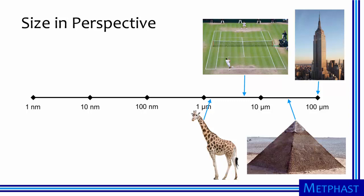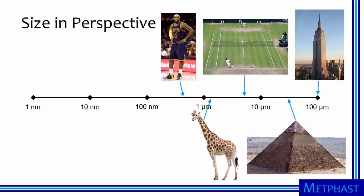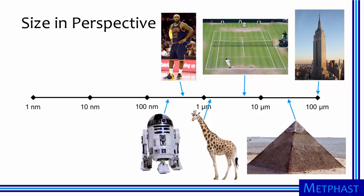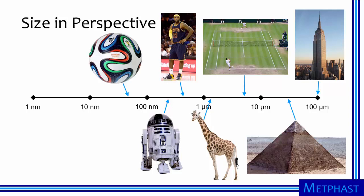If the Empire State Building were 100 micrometers tall, LeBron James would be 0.46 micrometers, or 460 nanometers tall. R2-D2 would be 250 nanometers tall. An official FIFA soccer ball would have a diameter of 50 nanometers.